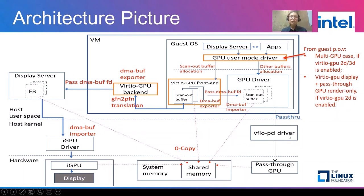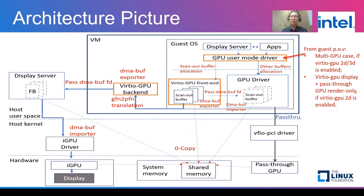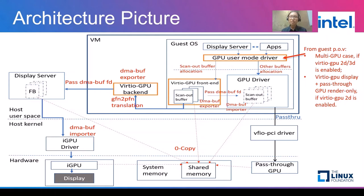Here is the high-level design picture. With a VirtIO GPU and a pass-through GPU, from the guest point of view, it's like a multi-GPU use case. If the VirtIO GPU is working in 2D-only mode, then it's a VirtIO GPU display plus pass-through GPU render-only case. Both cases are supported by the Linux user-space graphics stack. The user-space GPU driver is in charge of graphics buffer allocation and understands which buffer is the scan-out buffer. Code changes are added to the pass-through GPU user-space driver to ensure that a scan-out buffer is allocated through the VirtIO GPU front-end.